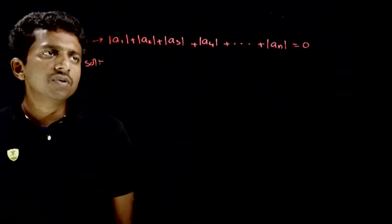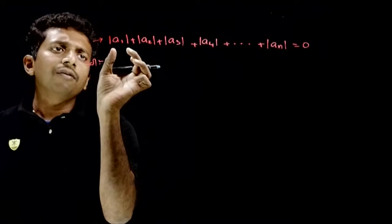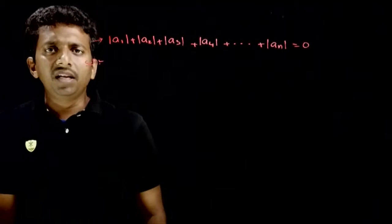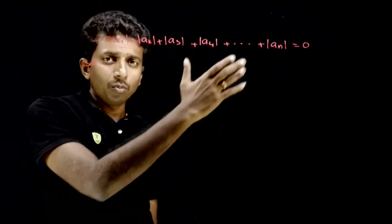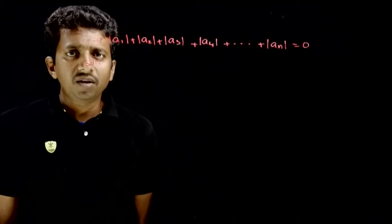So welcome students. In this question you are given that for some numbers a1, a2, a3, a4 up to an, mod a1 plus mod a2 plus mod a3 plus mod a4 up to plus mod an is equal to 0.